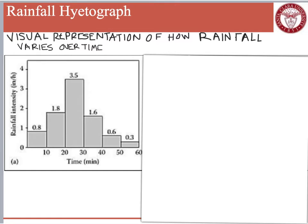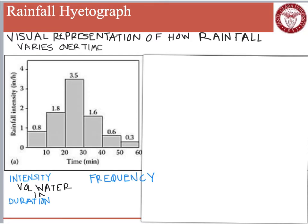When we look at these curves, there are three different things that we want to look at, and they are intensity, duration, and frequency. Intensity is the volume of water that falls over some specific time period. The duration is the length of time that the storm lasts — in this case, a 60-minute duration. The frequency is how often to expect some particular event.